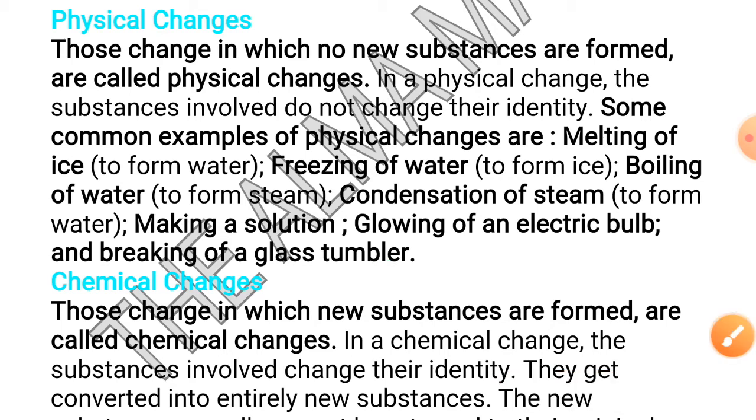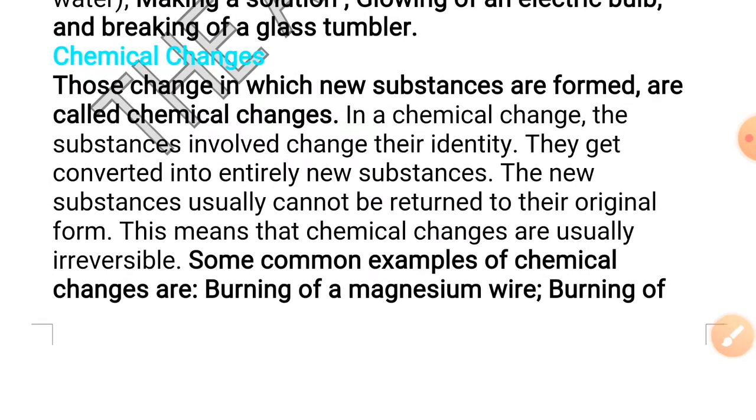Now, let us understand chemical changes. Those changes in which new substances are formed are called chemical changes. In a chemical change, substances involved change their identity. They convert to entirely new substances. The new substance usually cannot be returned to its original state. That's why chemical changes are irreversible. Once done, can't be reversed.